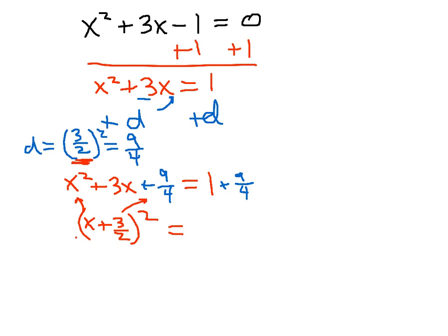Over here, 1 plus 9 fourths — well, I know 1 is just 4 over 4. So 4 fourths plus 9 fourths, we can write that as 13 over 4. And you want to combine that into one expression.